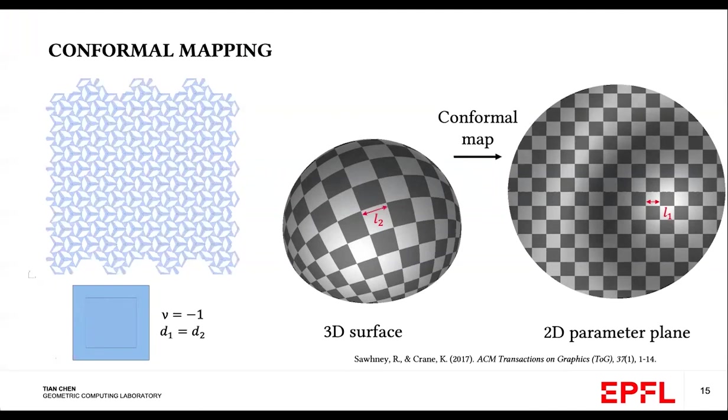More specifically, in order to have non-zero Gaussian curvature, we need the Laplacian of the scale factor to be non-zero.